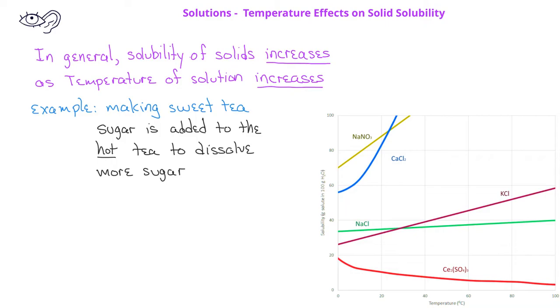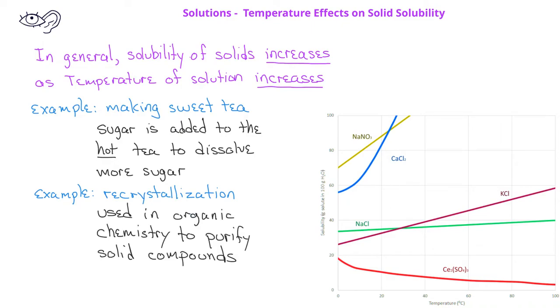Another useful technique that takes advantage of the increased solubility of solids at higher temperatures is recrystallization, which you'll learn in organic chemistry. In this process, you dissolve a solid in a warm solvent, then slowly cool the solution down, resulting in a supersaturated solution.